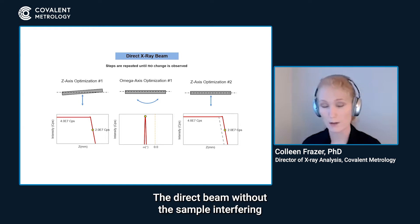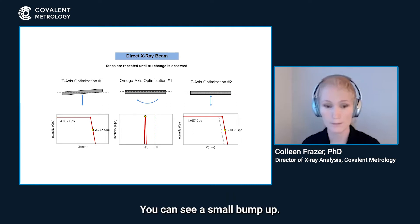The direct beam without the sample interfering for this particular set of optics and slits was 4e7 counts per second. As we got close to the point at which the sample started to block the beam, there was a bit of reflection off the surface. You can see a small bump up. As the sample came into the beam and started blocking the beam, there's a linear slope downwards in intensity until it finally reaches zero and the beam is completely blocked. The correct Z to set the diffractometer at is half of the intensity of the direct beam. So we had 4e7, we set it at the Z corresponding to 2e7.